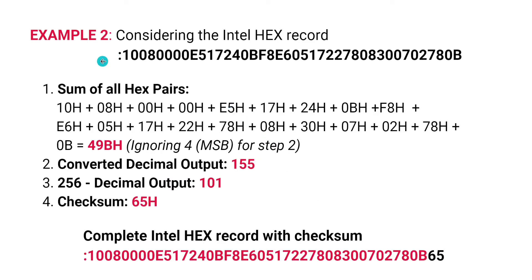Now we consider another example to demonstrate the case where we get three digits in the sum of the hexadecimal pairs. Again, we first split the given hex record into hexadecimal pairs, and once we sum all of them we get 49BH. Since we have three digits, we ignore the MSB — which is 4 — and only 9B is considered for the decimal conversion.